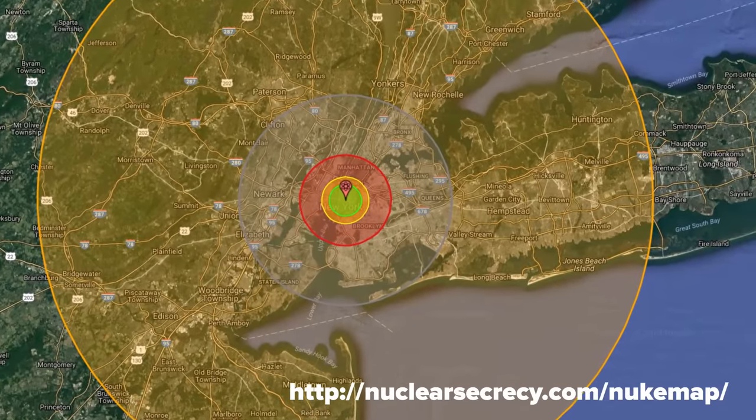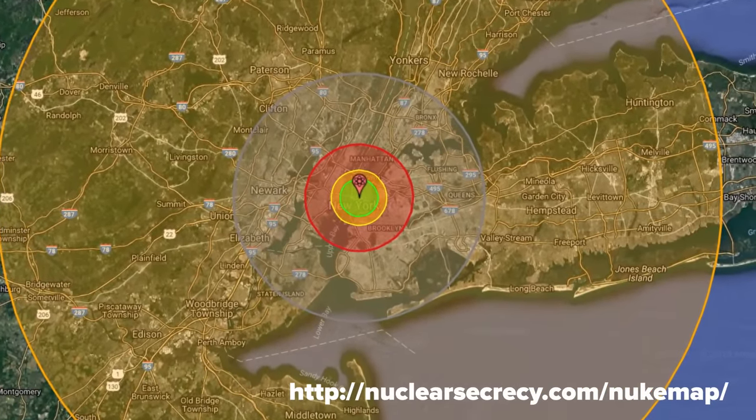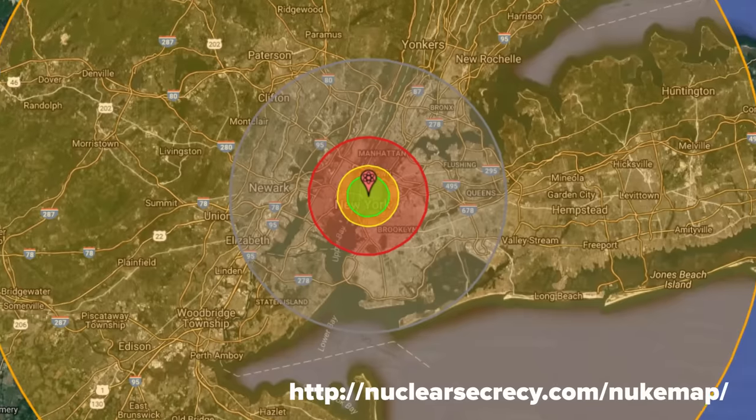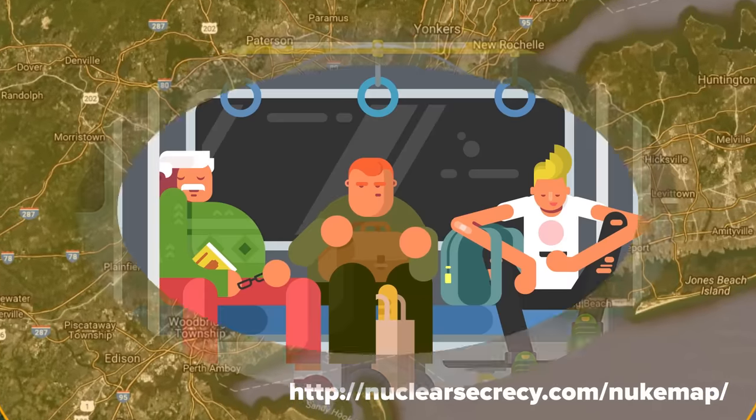and the radiation zone would stretch to Times Square and the Brooklyn Bridge. This is the zone in which between 50 and 90 percent of people would immediately die if they didn't get medical assistance.